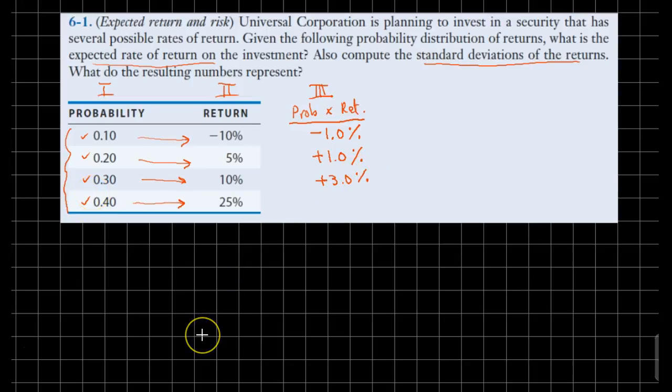And finally, the fourth state of the world, 40% chance, we will get 25% return. It should probably give us a 10% positive return. And we have these products for each state of the world.